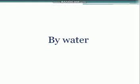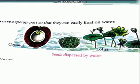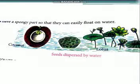Next is dispersal by water. Plants which grow along the banks of rivers, streams, or the sea disperse their seeds by the flow of water. For example, the seeds of coconut have a fibrous outer coating, and the seeds of lotus plants have a spongy part.